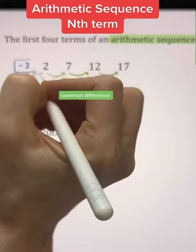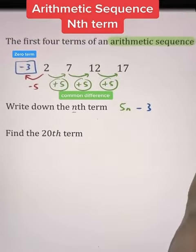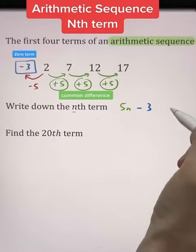Whatever we get here on the left, that's called our zero term, and that gets placed in the nth term formula. Hence my final answer for two marks is the nth term is 5n minus 3.